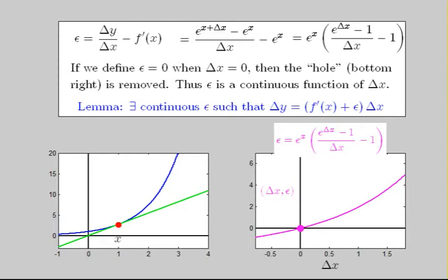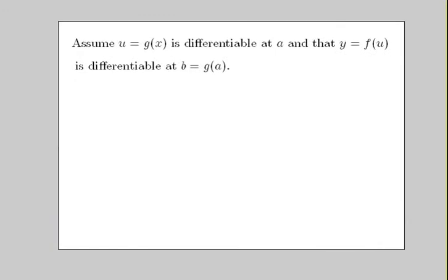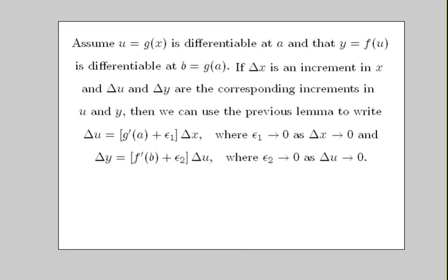Now, to go about proving the chain rule, we need the inside function u to be differentiable at a, and an outside function y to be differentiable at b, which equals g of a. Using the previous lemma, we can define continuous functions epsilon 1 and epsilon 2 as follows. So, as delta x approaches 0, both delta u and epsilon 1 will approach 0.